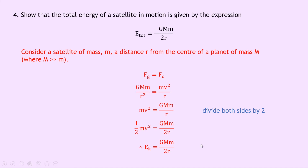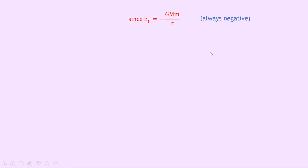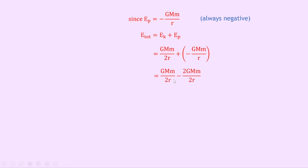Notice Ek is always positive. Since we already have the expression for gravitational potential energy Ep equals minus GMm over r, which is always negative, we can write total energy equals Ek plus Ep. Substituting in gives GMm over 2r plus the quantity minus GMm over r. Putting both terms over a common denominator of 2r, we get GMm over 2r minus 2GMm over 2r, and simplifying gives E total equals minus GMm over 2r.